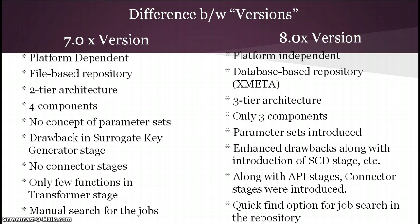In the 7.x version there were four components: Designer client, Administrator client, Director client, and Manager client. From the 8.x version, the Manager client was merged into the Designer client, so now there are only three components. Also, in the 7.x version there was no concept of parameter sets — you needed an individual parameter for every job. From the 8.x version, parameter sets were introduced: you can create a whole set of parameters, give it a name, and reuse it anywhere in the project.